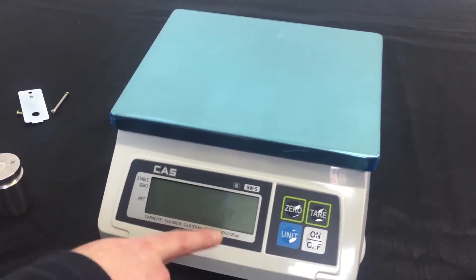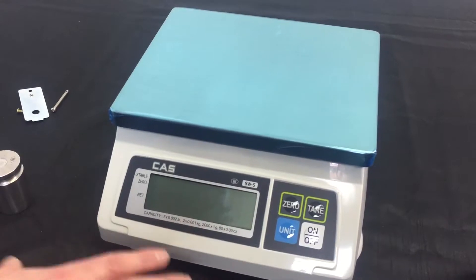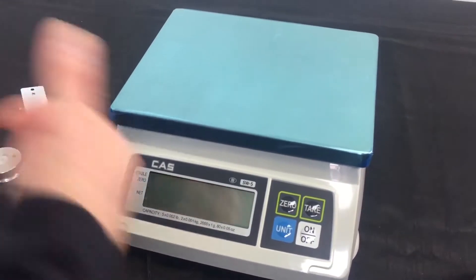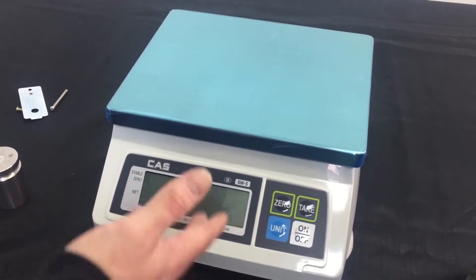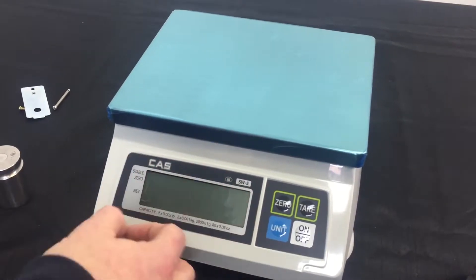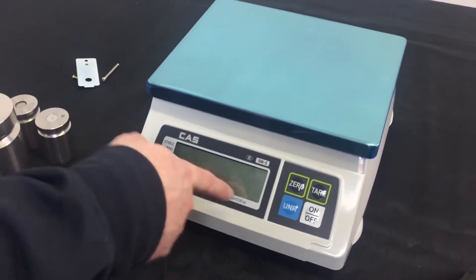Now, it says unit and one is flashing. One is for pounds, which is good. We want to calibrate in pounds today. Make sure that you know which type of scale you're working with to know whether it's kilograms or pounds. Zero is for kilograms. One is for pounds.